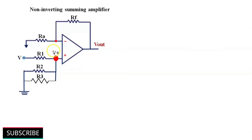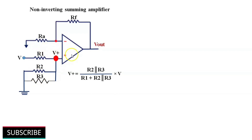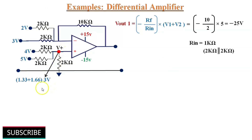Now consider the non-inverting terminal voltages acting alone with the inverting terminal at ground — the circuit acts as a non-inverting summing amplifier. Rin becomes 1 kΩ due to the parallel combination of two 2 kΩ resistors. To find V⁺, we treat it as a 3-input non-inverting summing amplifier with equal resistors R1, R2, R3, so V⁺ = (V1 + V2 + V3)/3. Here V⁺ = (0 + 4 + 5)/3 = 3 V.